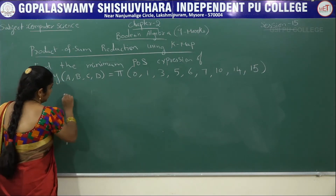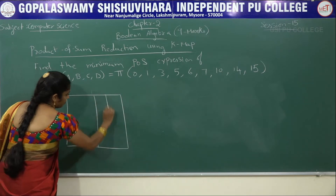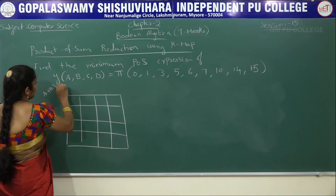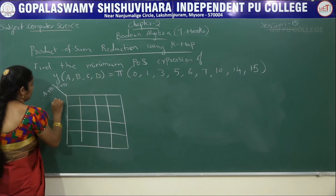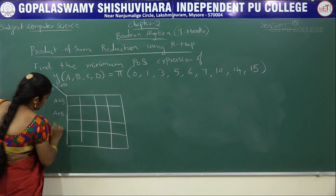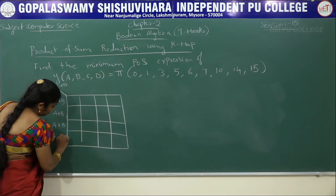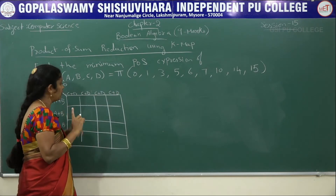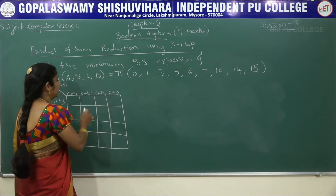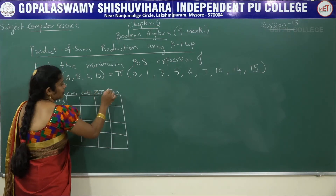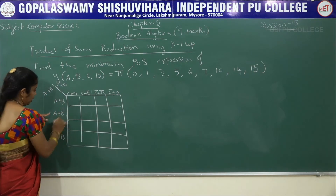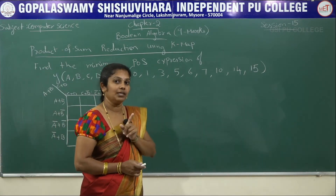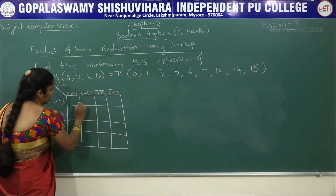Totally four variables, so write four rows and four columns. For maxterm, the row header is A plus B and the column header is C plus D. Write the variable as A plus B for rows and C plus D for columns. For maxterm, for the first three don't put any bar, then write bar 1, 2, 3, then 1, 2, 3, 4. Wherever the given value appears, write 0 there. Whereas in minterm, we write 1.